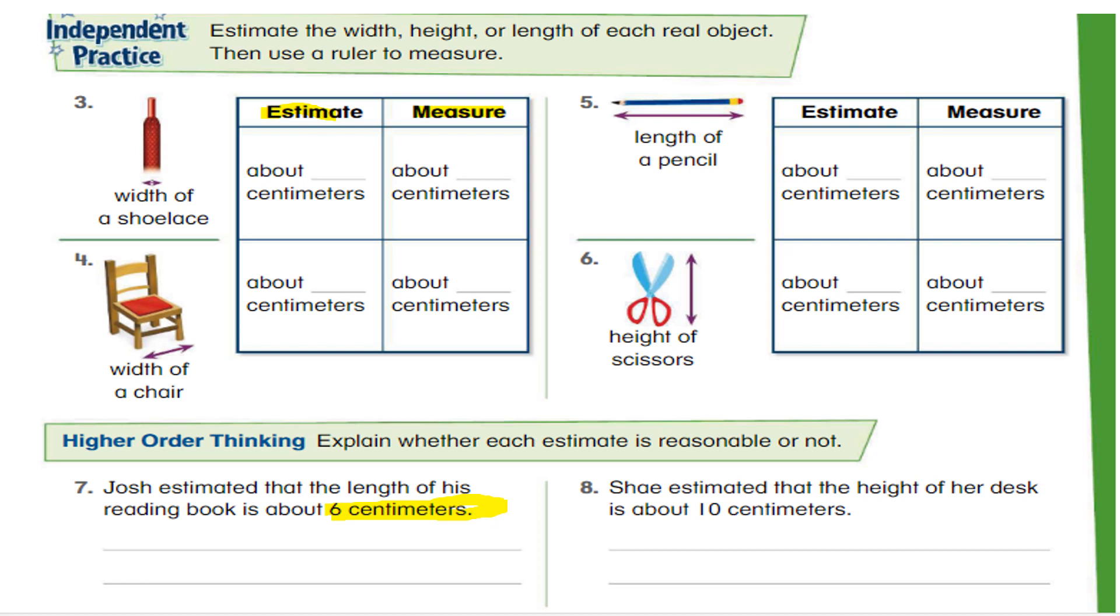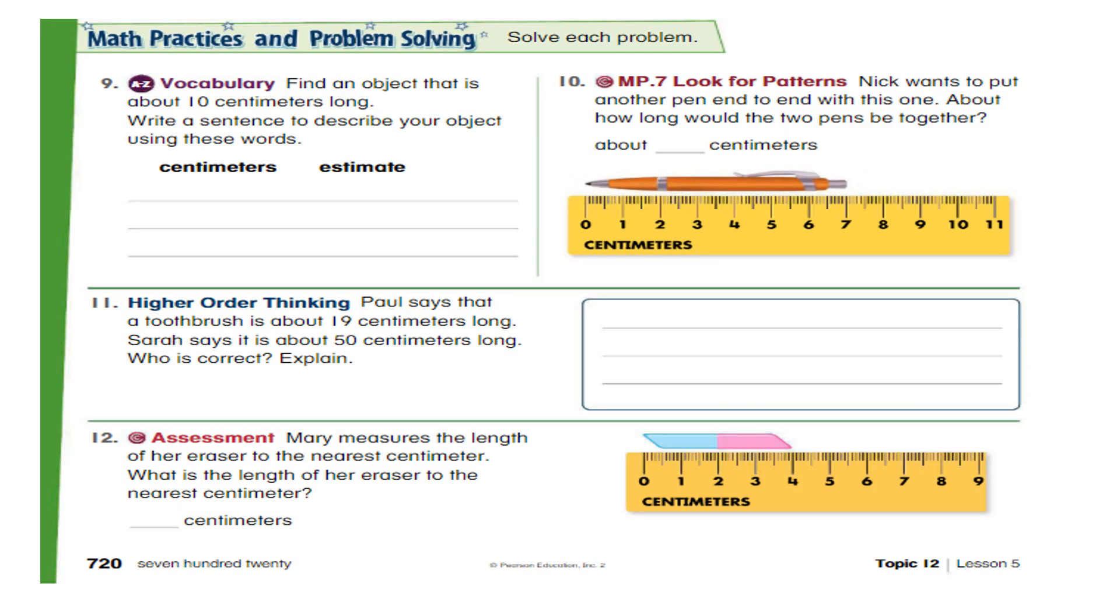Then, Shy estimated that the height of her desk is about 10 centimeters. In this problem, the girl is saying that the desk or the reading table is only 10 centimeters tall. Is she correct? Can a desk be only 10 centimeters long? So just think and write your answer here on the line.